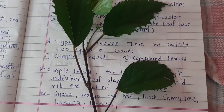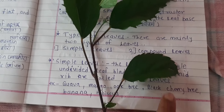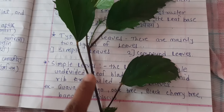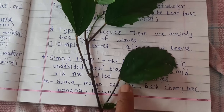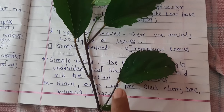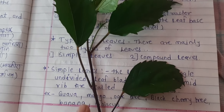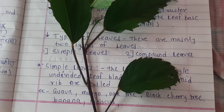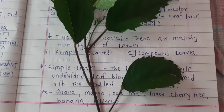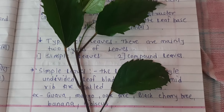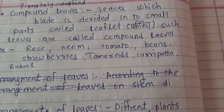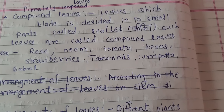This leaf is of a hibiscus plant. Here we can see that this is a main branch, main stem, and here only one leaf blade is attached to this stem. Here also one leaf blade is attached to this stem. That is why this type of leaf is called a simple leaf.